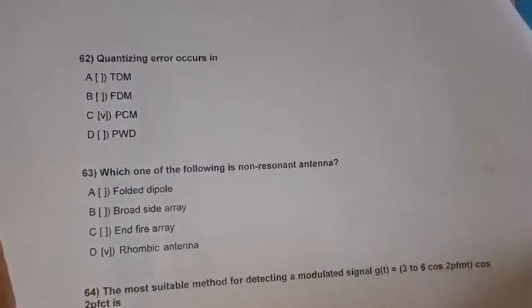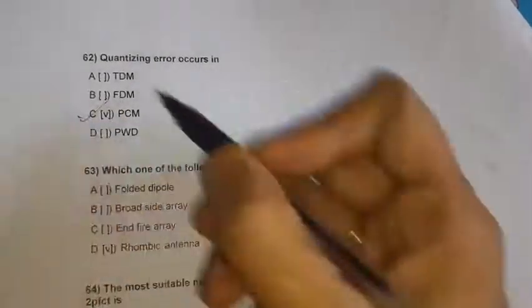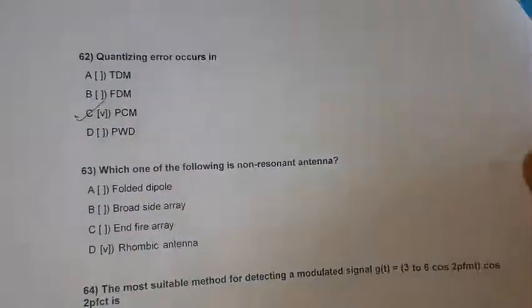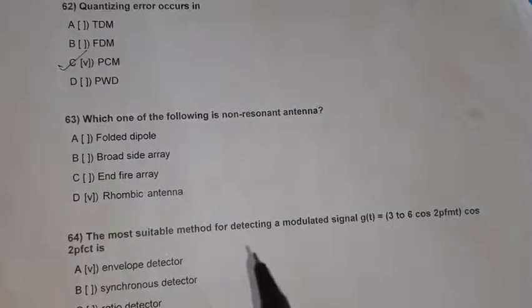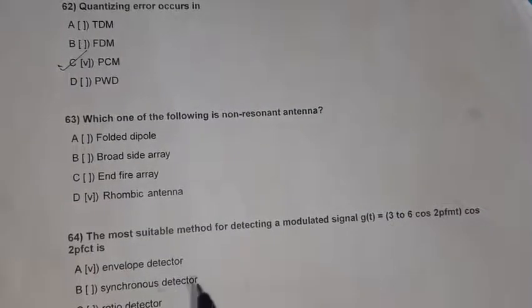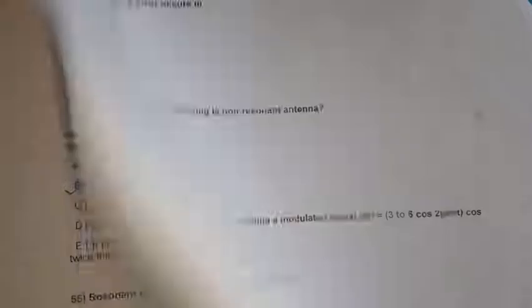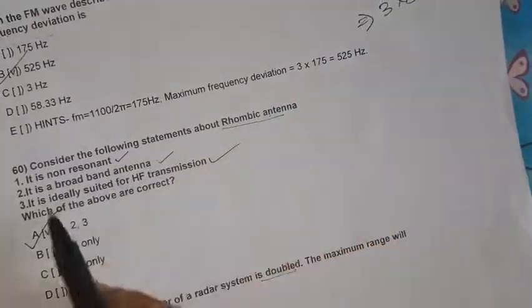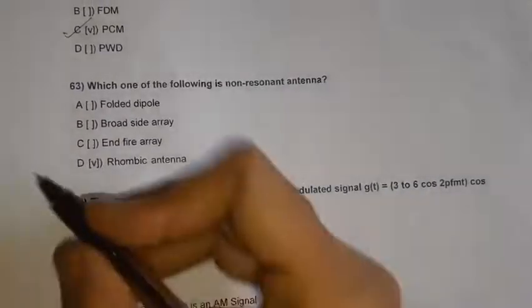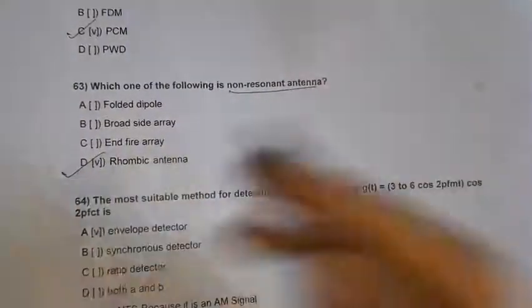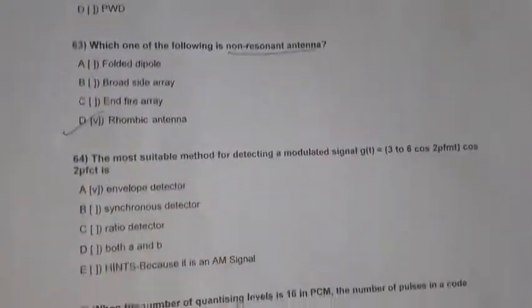Question 62: The quantizing error occurs in pulse code modulation PCM. Question 63: Which of the following is a non-resonant antenna? Rhombic antenna is a non-resonant antenna — that is the right answer.